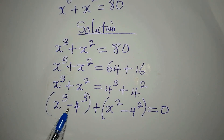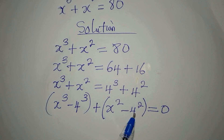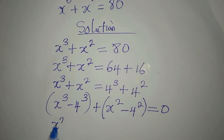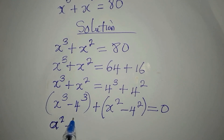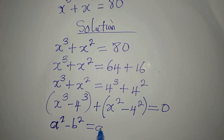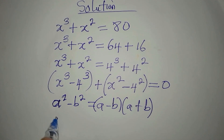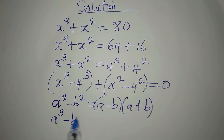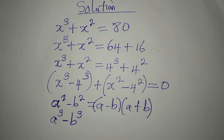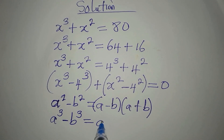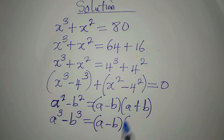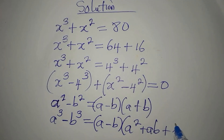Now we can apply the difference of two cubes and difference of two squares. The difference of two squares identity is: a squared minus b squared equals (a minus b)(a plus b). For the difference of two cubes, a to the power of 3 minus b to the power of 3 equals (a minus b)(a squared plus ab plus b squared).